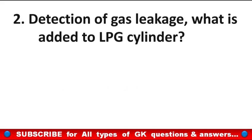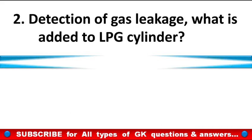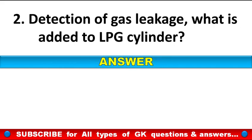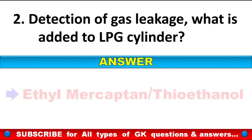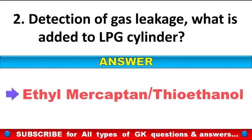Detection of gas leakage — what is added to an LPG cylinder? Answer: Ethyl mercaptan, also known as thioethanol.